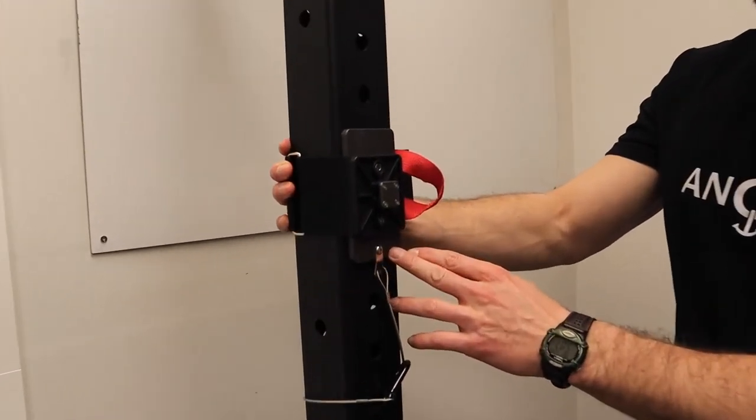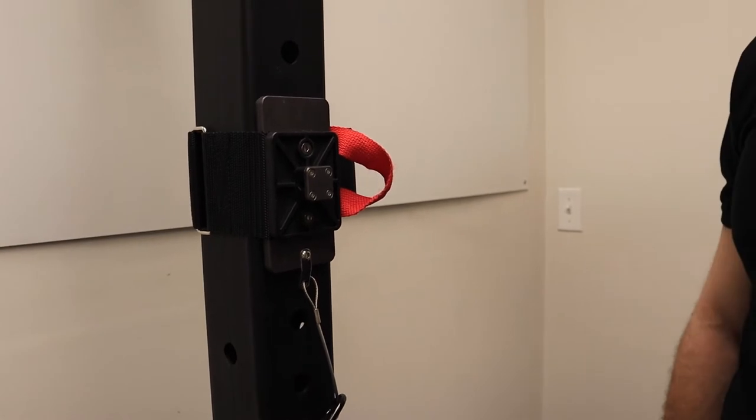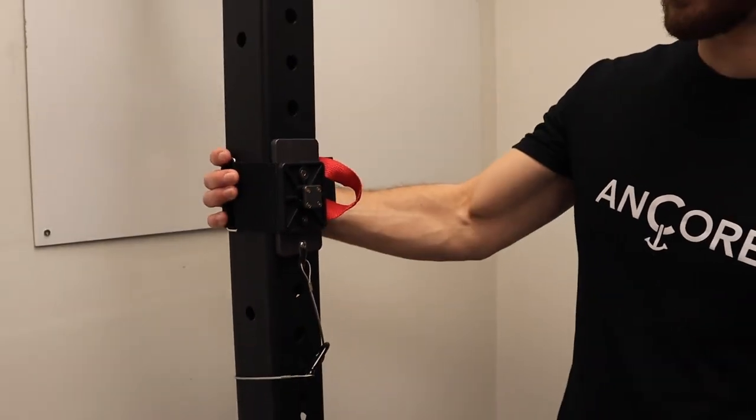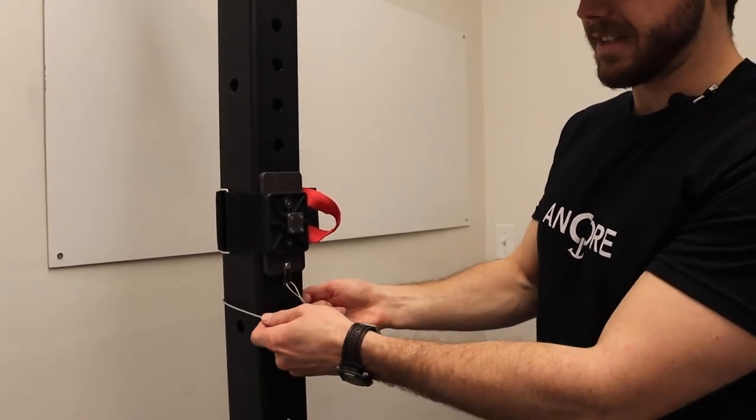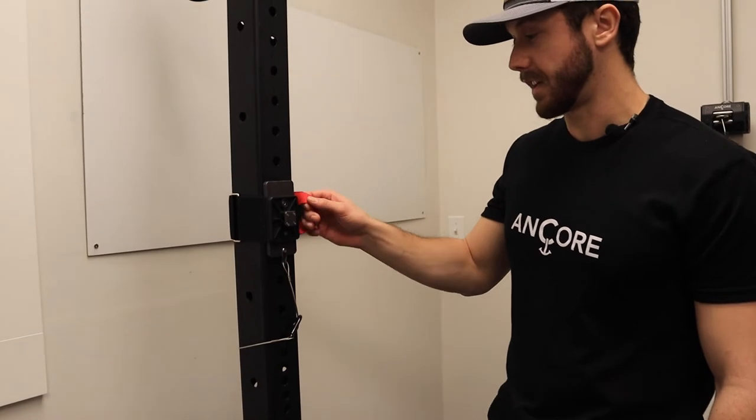I can just take that out and show you how this mount works. This is the strap mount. This strap mount is the most universal one. It comes with every single unit that we sell. Aluminum plate with an industrial Velcro strap and a steel safety lanyard. Just an extra fail-safe mechanism.